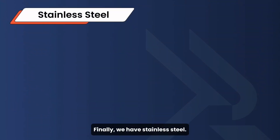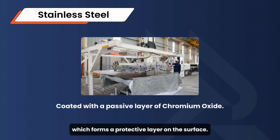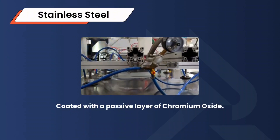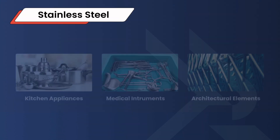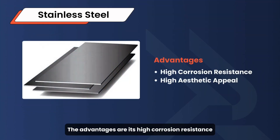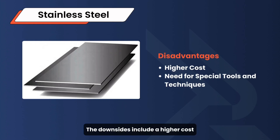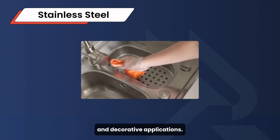Finally, we have stainless steel. Known for its excellent corrosion resistance, stainless steel contains chromium, which forms a protective layer on the surface. Stainless steel is not only resistant to rust, but also strong and durable. It is available in various grades, each suitable for different applications. Common uses include kitchen appliances, medical instruments, and architectural elements. The advantages are its high corrosion resistance and aesthetic appeal. The downsides include a higher cost and the need for special tools and techniques to work with it. Stainless steel's durability and resistance to staining make it an excellent choice for functional and decorative applications.